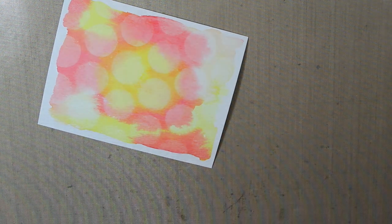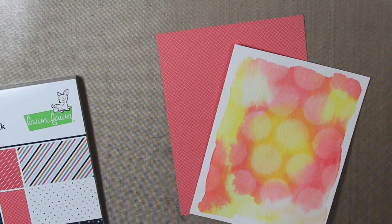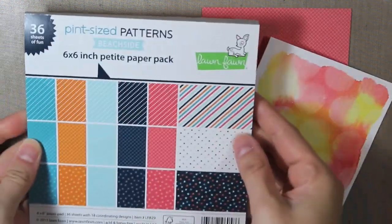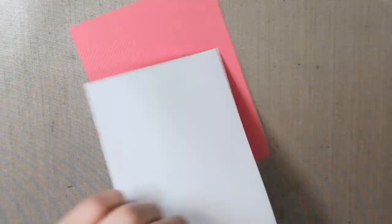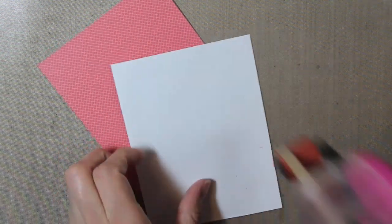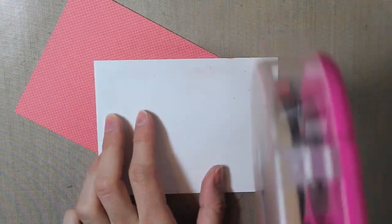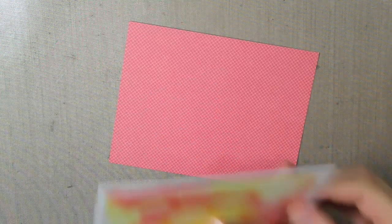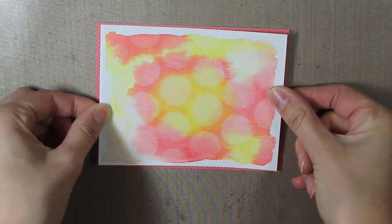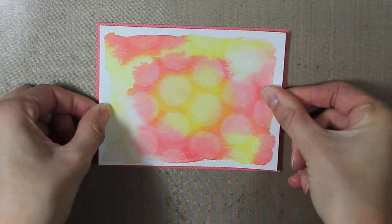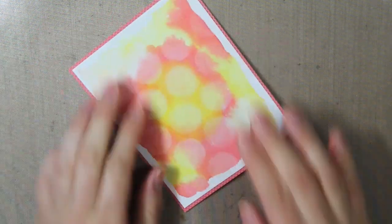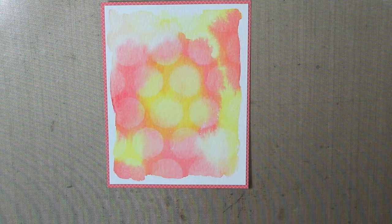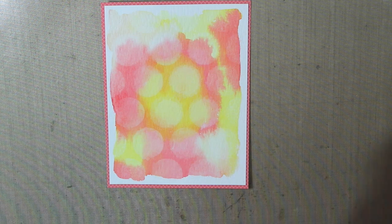And then I'm going to mat this with some pattern paper. This is from the Lawn Fawn Seaside, or Beachside, 6x6 paper pad. And I'm using the coral color. And I'm just going to adhere this onto pattern paper. The reason I did this before die cutting is because I want the circle to go all the way through both of those. So I decided to adhere them down together.